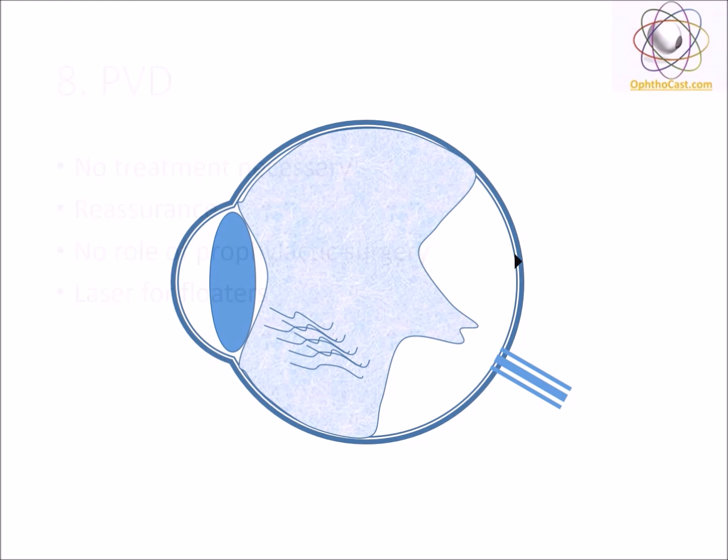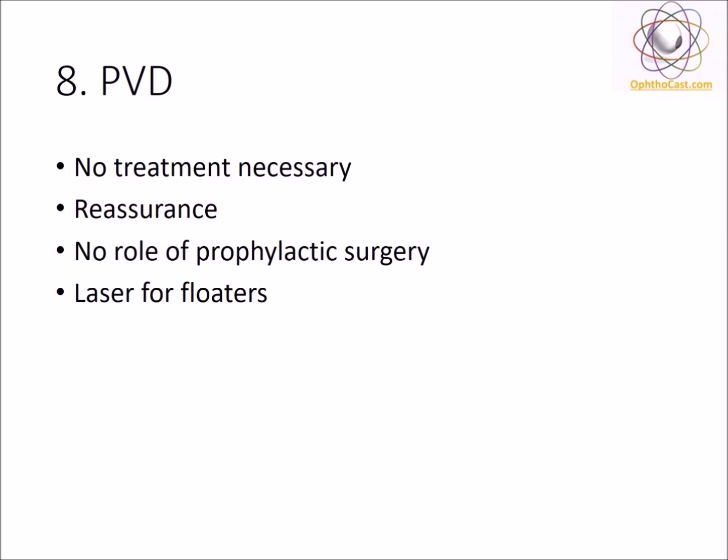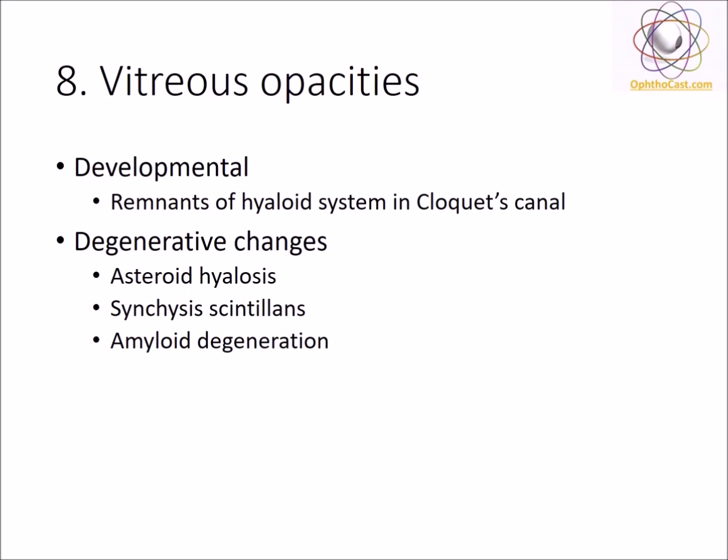Here you can see the progression of the PVD. PVD does not require any treatment per se — reassurance is all that is required for the patient. However, some centers report good results with laser therapy for floaters. There are other forms of vitreous opacities. The developmental remnants in Cloquet's canal can present as opacities. The other established degenerative conditions are asteroid hyalosis, synchisis scintillans, and amyloid degeneration.